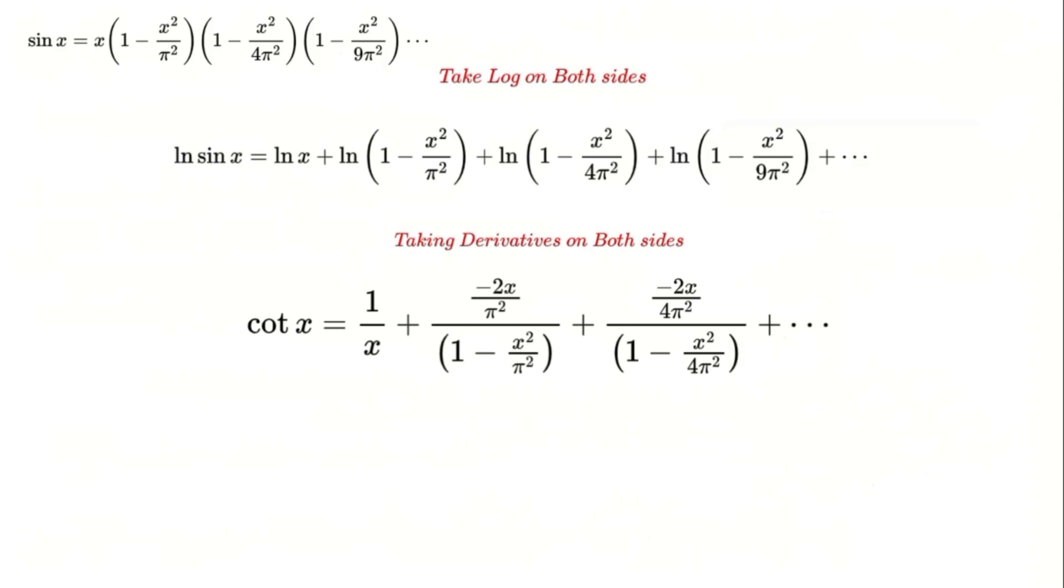The derivative of the logarithm of sine is cotangent, giving us an infinite series to analyze. But why stop here? To align this series with a geometric series, we multiply both sides by x over 2.